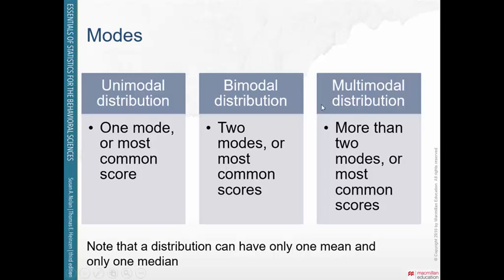You can have a unimodal distribution with only one mode, a bimodal distribution with two modes, or a multimodal distribution with more than two modes. Distributions can only have one mean and one median, but they can have many modes.